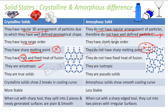Crystalline solids are anisotropic because the arrangement is fixed — if you observe from different directions, the physical properties differ. Amorphous solids are isotropic because since there is no fixed arrangement, you observe almost the same physical properties in any direction.